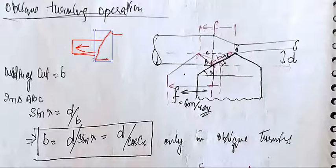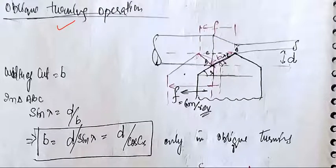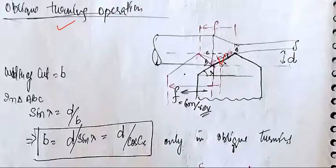When the cutting edge makes a certain angle with respect to the cutting velocity direction, that is what we call oblique cutting — not oblique turning. As far as our topic of oblique turning is concerned, the tool is perpendicular, but the side cutting edge — or end cutting edge — possesses some angle, which we call Cs.